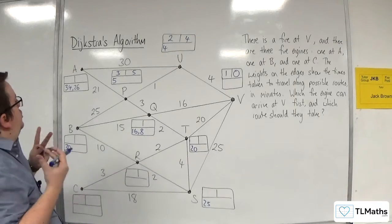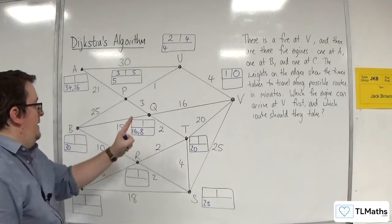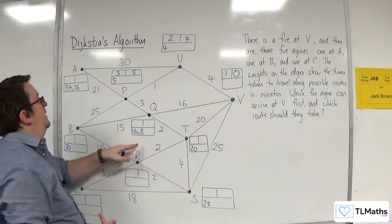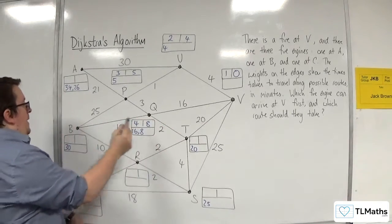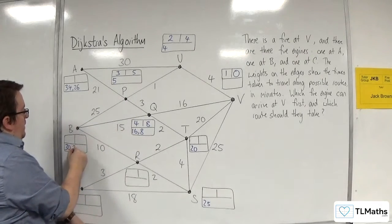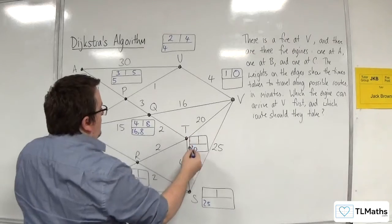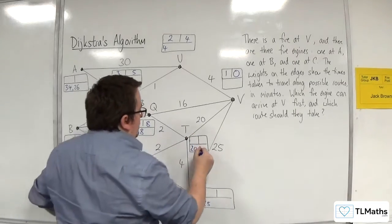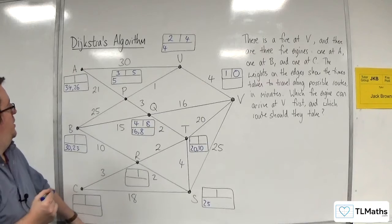So that's all the roots out of P. So the next shortest, we've got 26, we've got 30, we've got 8, 20, and 25. So it's the 8. So 4 and 8. So 8 plus 15 is 23, which is better than 30. 8 plus 2 is 10, which is better than 20. And that's all the roots out of Q.